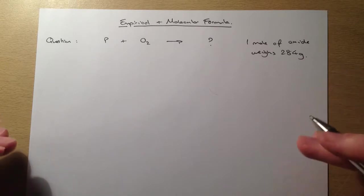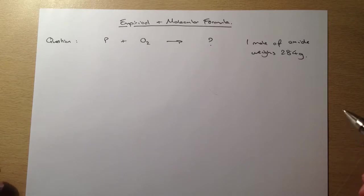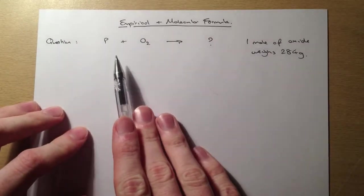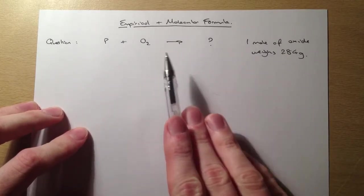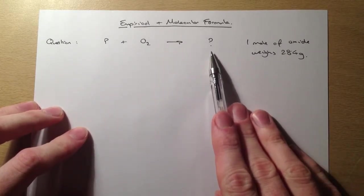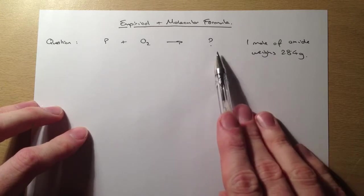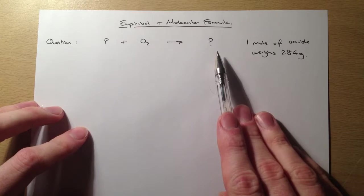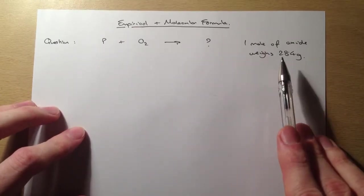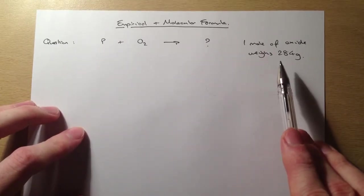So we're going to go through the same step-by-step process for both of them, even though they're quite different questions. So the first one tells us that we've got phosphorus being burnt completely in oxygen to give an oxide, and it wants us to find out what is the empirical formula of the oxide and then what the molecular formula of the oxide is,